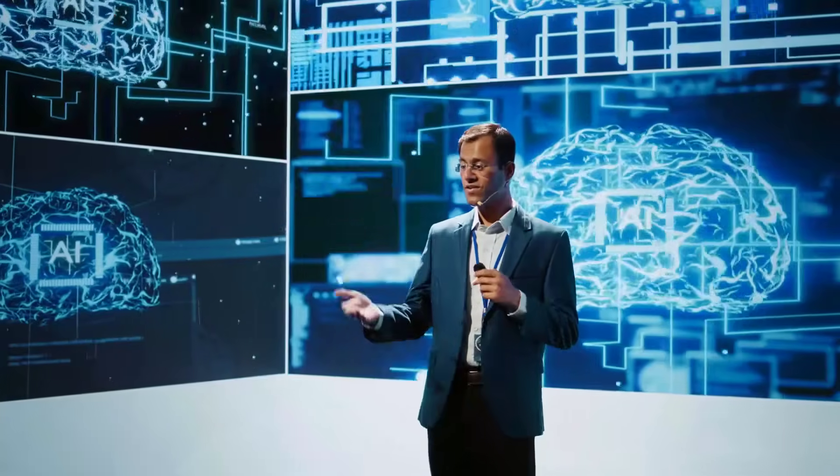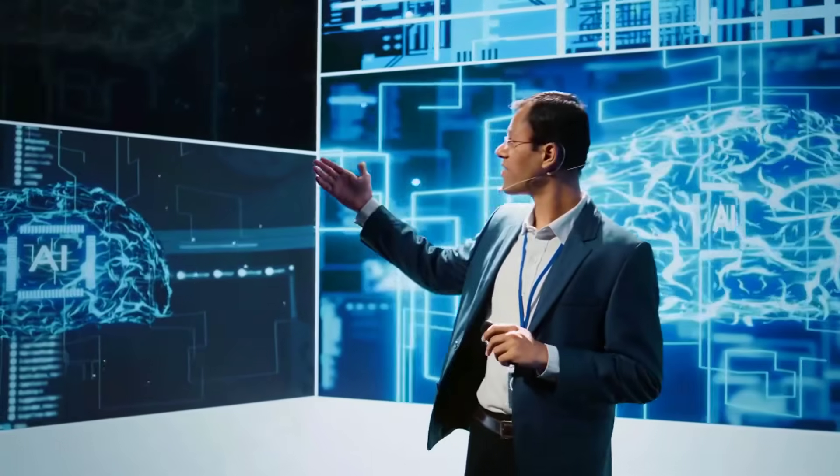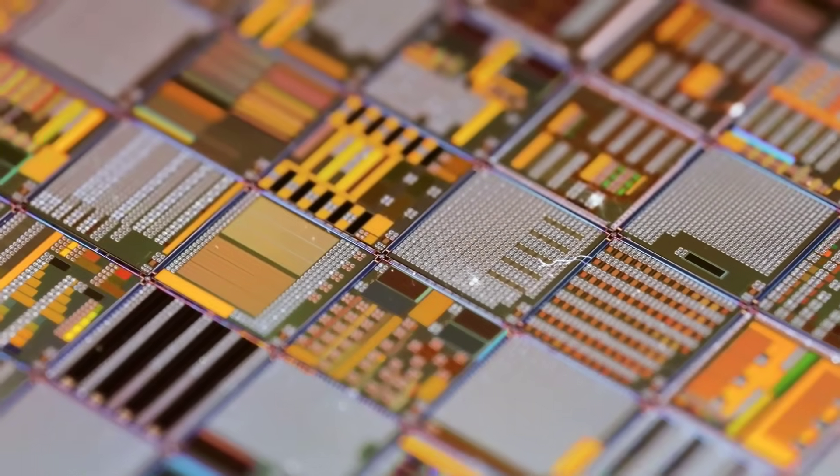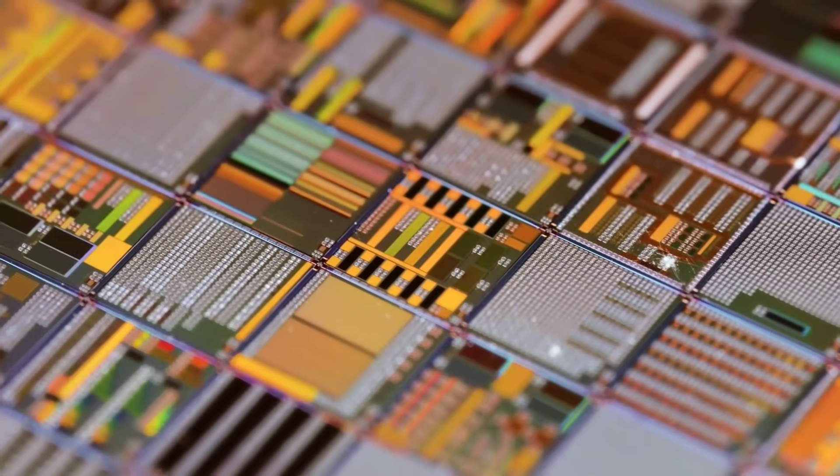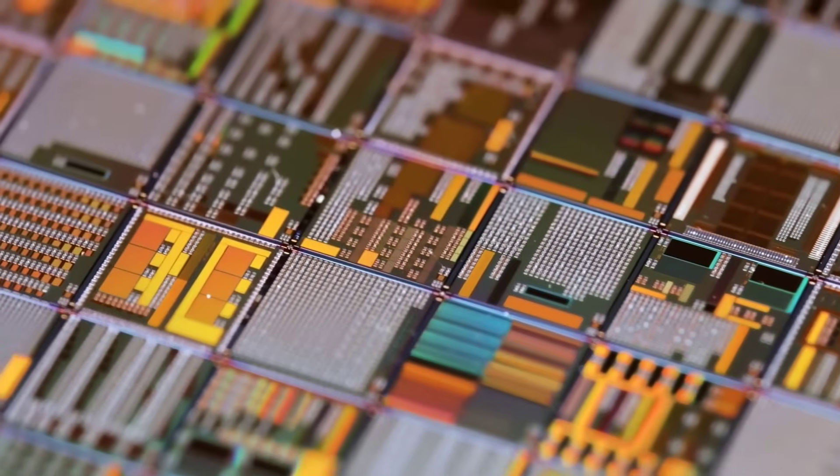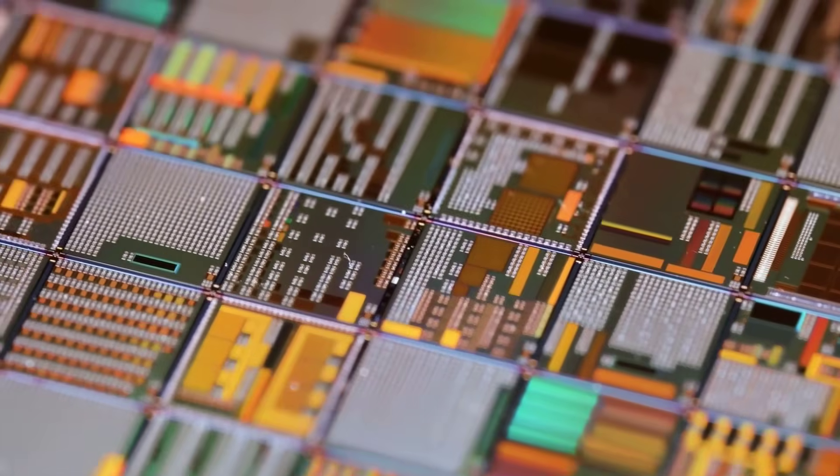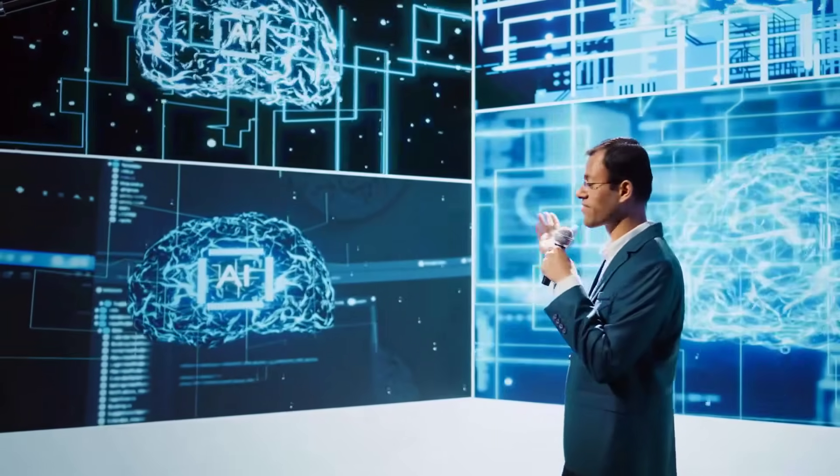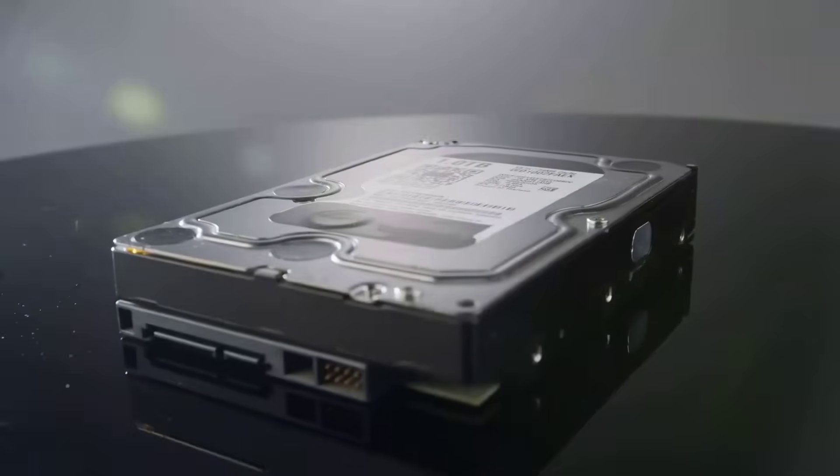Now I need to show you something. I came across a keynote from an IBM Research VP from last month, and I've never seen a tech executive look genuinely scared before. But when he talked about their analogue chip results, they built an analogue AI chip that performs matrix calculations, the literal foundation of all AI, using 14 times less energy than digital. And here's what made his hands shake while presenting. That's the first generation. They think they can hit 100x efficiency within three years. Do you understand what that means?